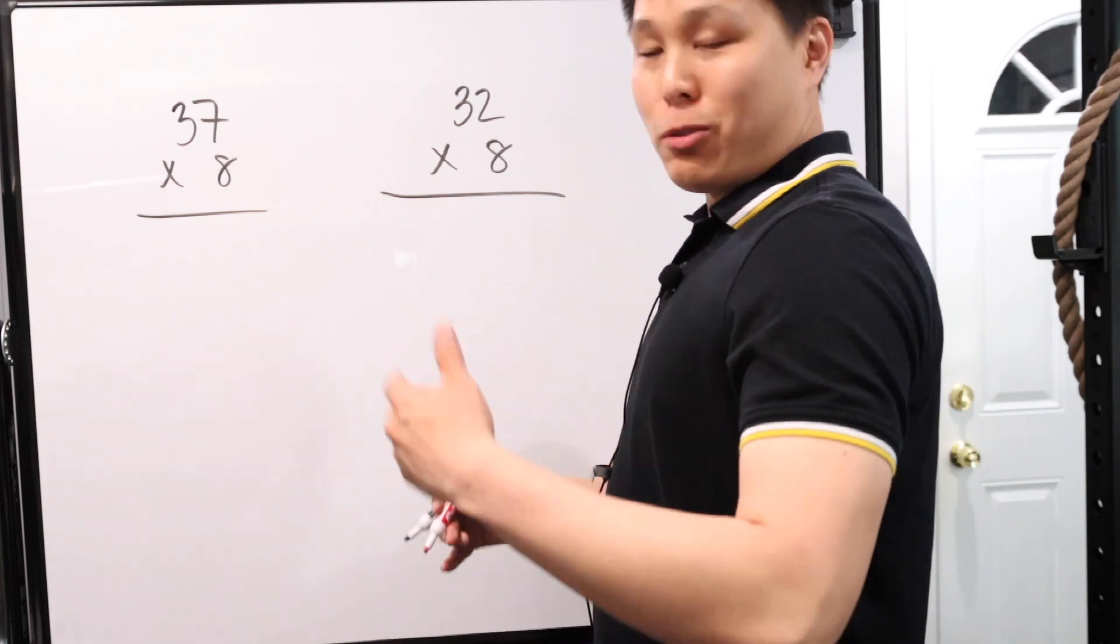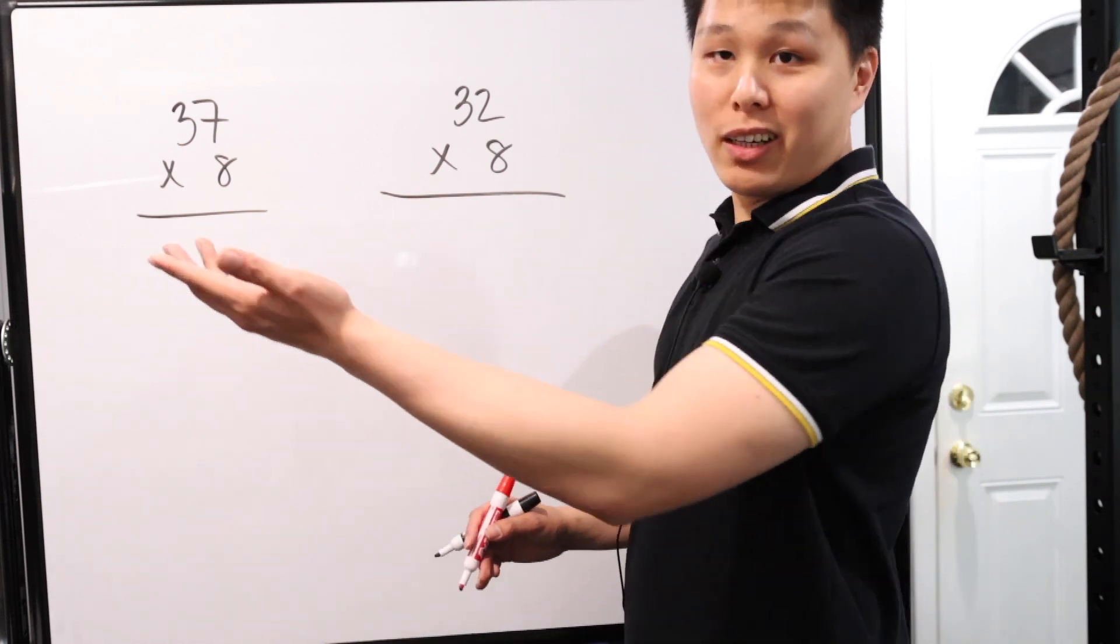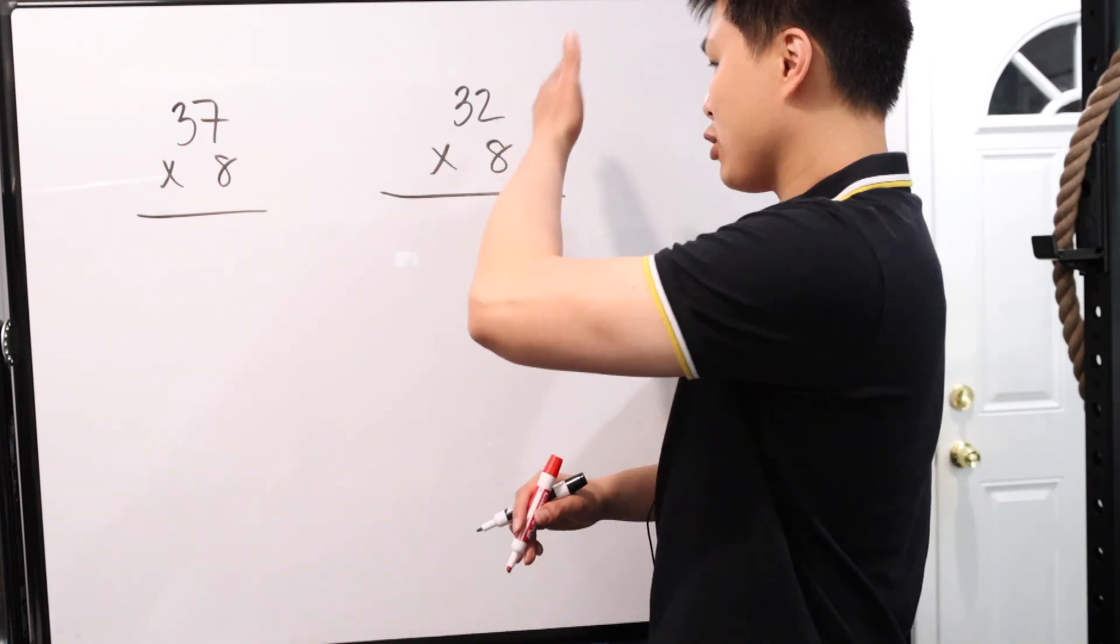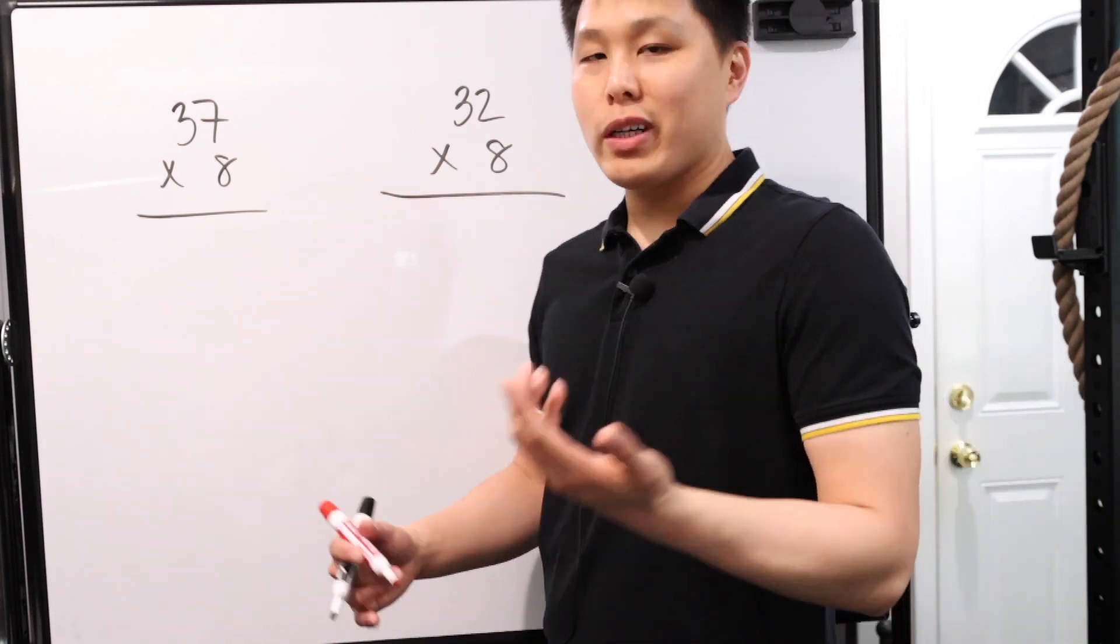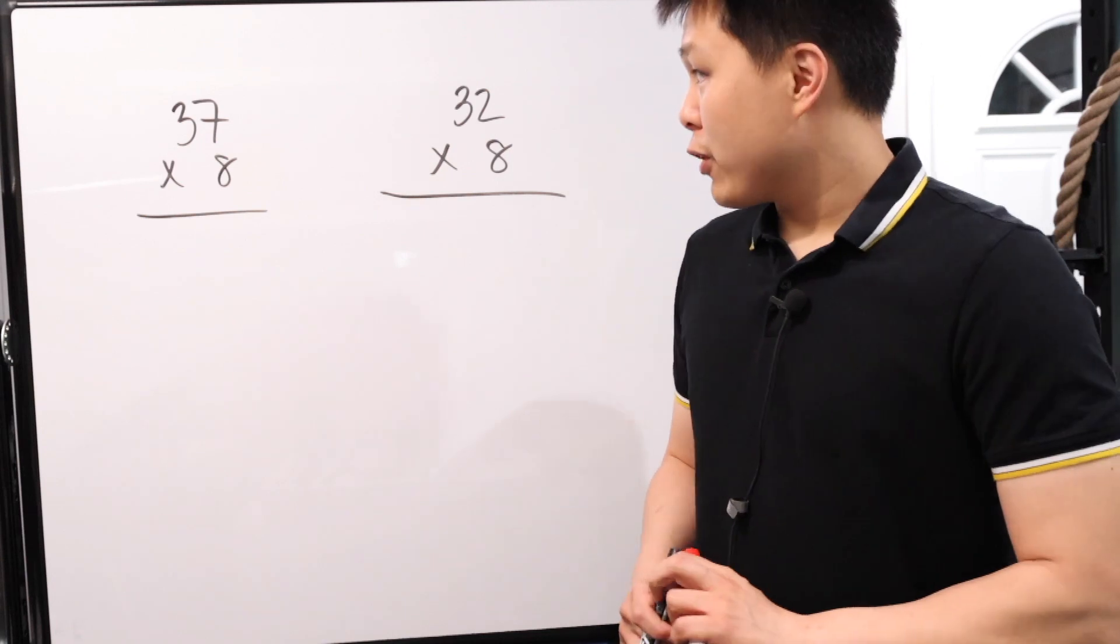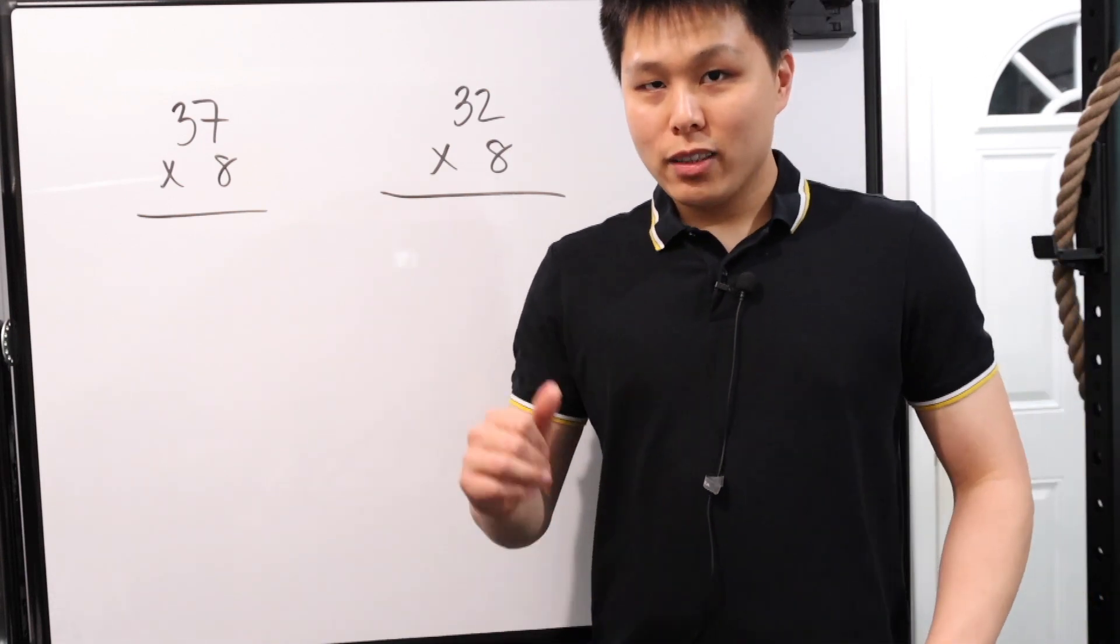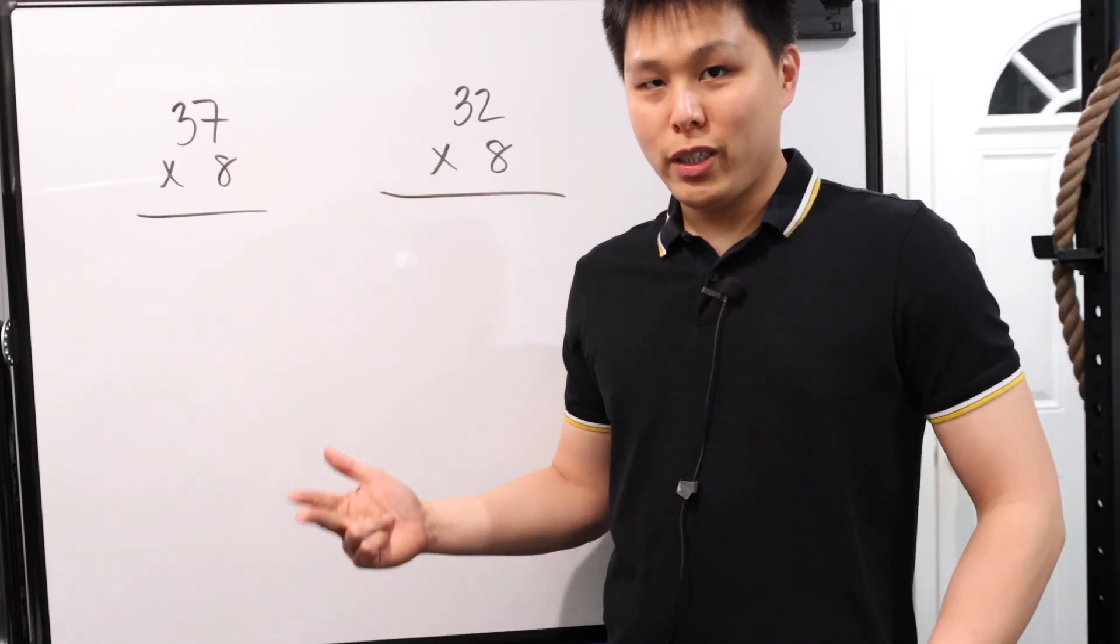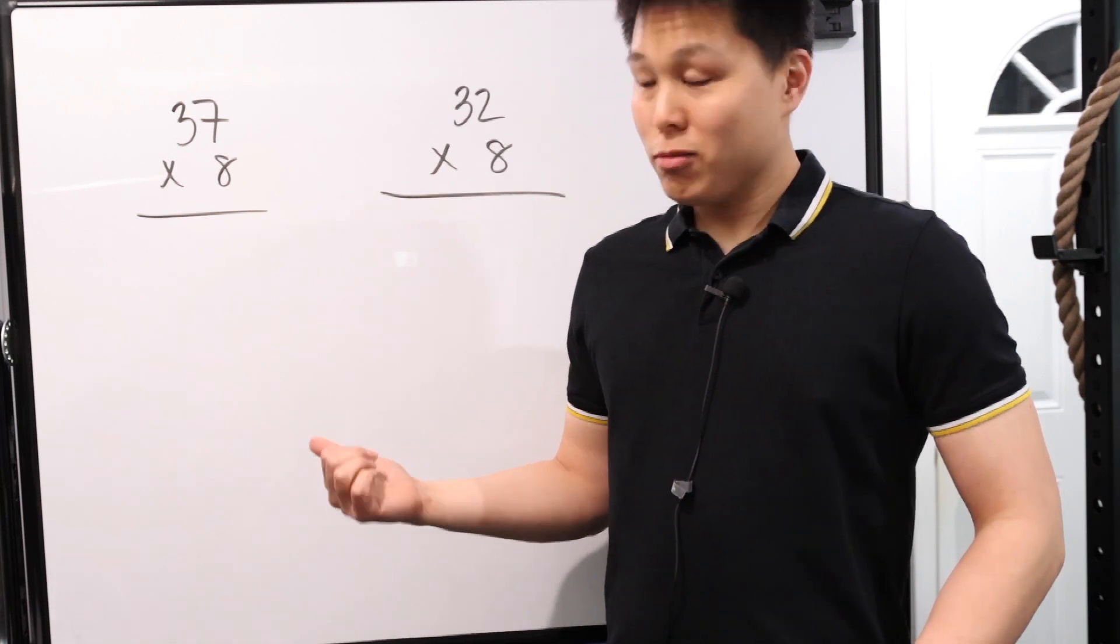So let's put this into practice. All right, so I mentioned 37, 32. You might as well use it as an example. So 37 times 8, 32 times 8. Of course I choose 8 because I don't want it to be a small number. Make your life a little more difficult. So let's see if you guys can figure it out very quickly. Ready, set, go. One, two, three, four, five. Got it?